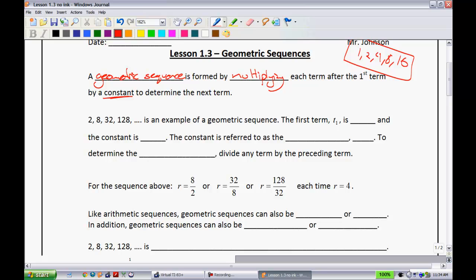So let's take a look. 2, 8, 32, 128, the example I have there, is an example of a geometric sequence. The first term, t sub 1, is 2, and the constant is 4. So this constant, if you look, 2 times 4 gives you 8, 8 times 4 gives you 32, 32 times 4 gives you 128. So just like we had before that common difference, this time we're going to call this the common ratio, and the letter we use to represent that is r.